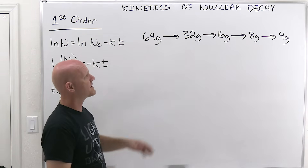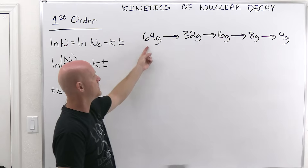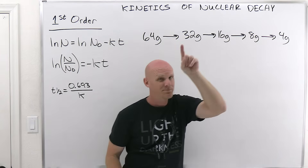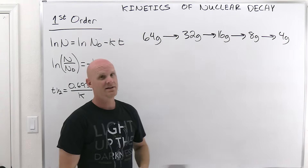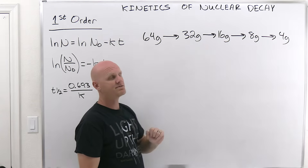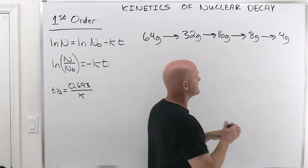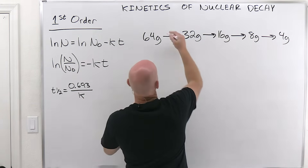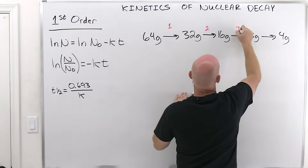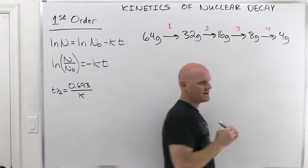One thing to note: a lot of students look at this and count the number of values listed, but that's bad counting. Count the arrows — it's the process that is the half-life. So count the arrows: 1, 2, 3, 4 half-lives. This would be the first half-life, the second half-life, the third half-life, the fourth half-life.